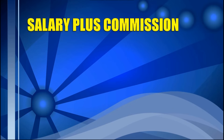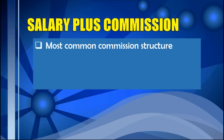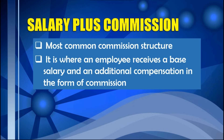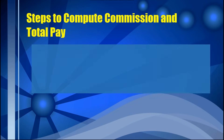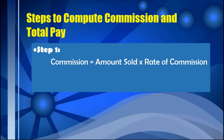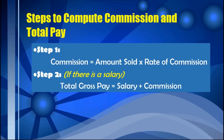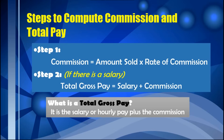Next is the salary plus commission, which is the most common commission structure. An employee receives a base salary and an additional compensation in the form of commission. This ensures the employee has a take-home pay, while his total gross pay varies according to his sales performance — the bigger the sales, the higher the commission. To solve for commission: multiply the amount sold by the rate of commission. For total gross pay: add salary plus commission.